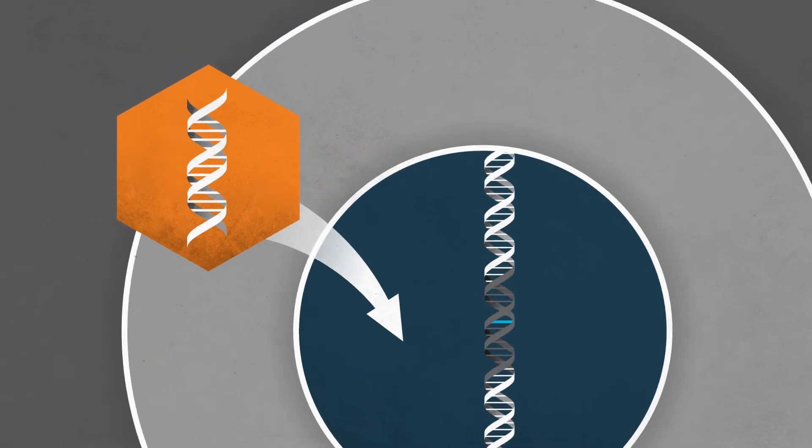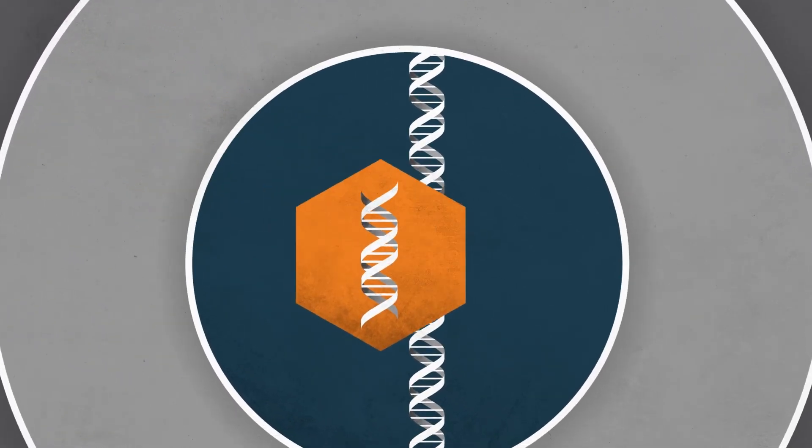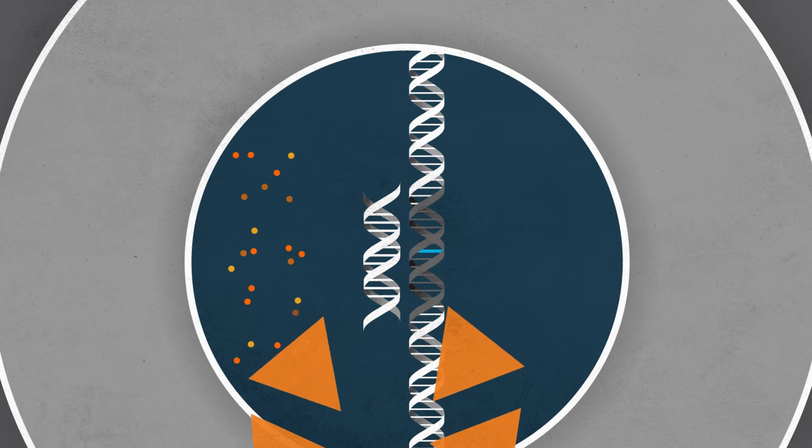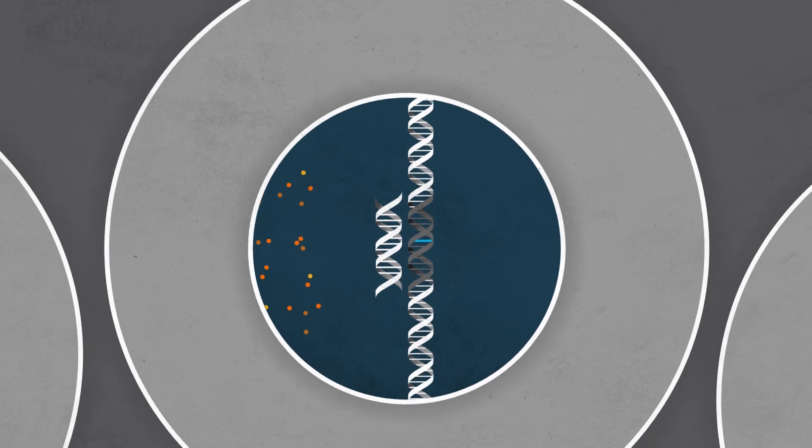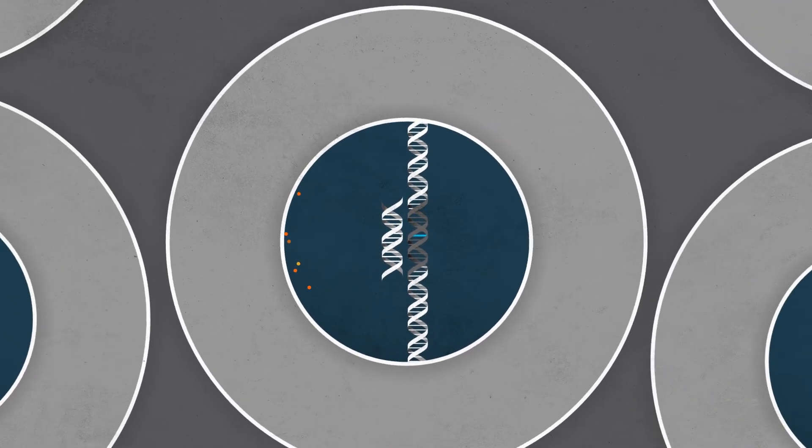When the AAV vector reaches the nucleus of the cell, it releases the working copy of the gene. In this kind of gene replacement therapy, the new gene sits separate from your DNA inside the nucleus, or control center, of the cell.